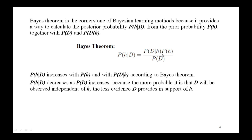As one might intuitively expect, P(H|D) increases with P(H) and with P(D|H) according to Bayes theorem. It is also reasonable to see that P(H|D) decreases as P(D) increases, because they are inversely proportional. The more probable it is that D will be observed independent of H, the less evidence D provides in support of H.